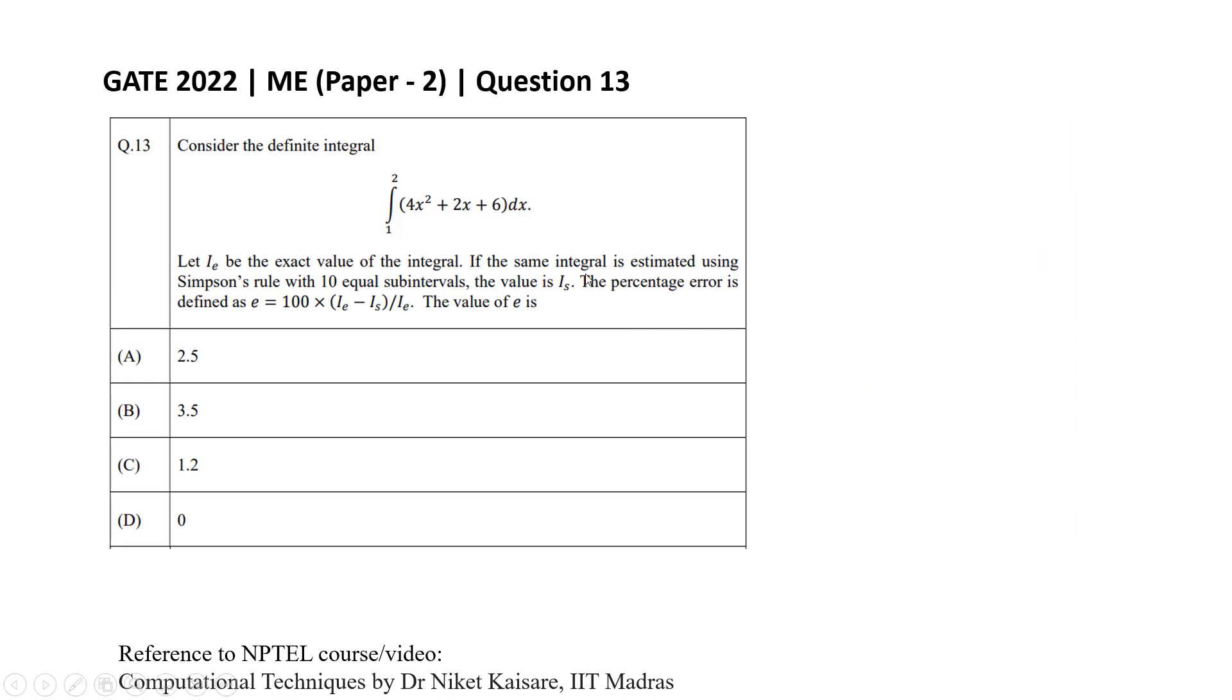Knowing this, it is straightforward to find the correct option to this problem. Since in this problem the function for us, that is 4x squared plus 2x plus 6, is a quadratic function.